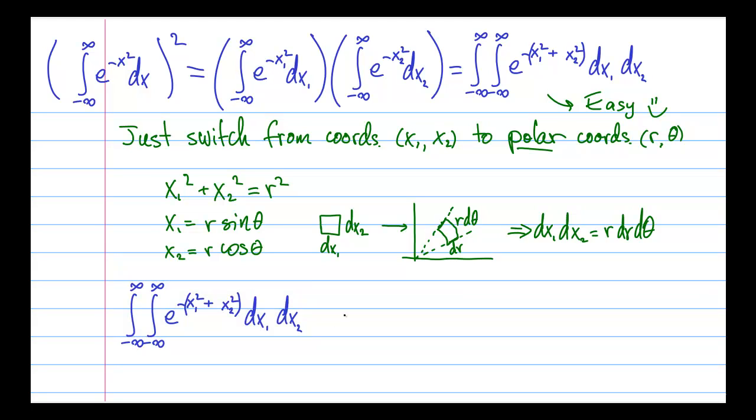And so when we do these substitutions, what we end up is a double integral in polar coordinates, where r goes from 0 to infinity and theta goes from 0 to 2pi of e to the minus r squared r dr d theta.